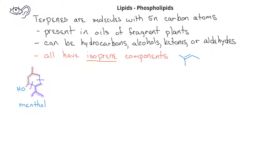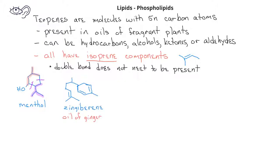When we look at terpenes, we do not necessarily require that the double bond be in place. We only require that we have essentially a two-methylbutane series of carbon atoms. Zingirobrine is another terpene. It has 15 carbons, so it essentially has three isoprene units. Zingirobrine is also known as oil of ginger.